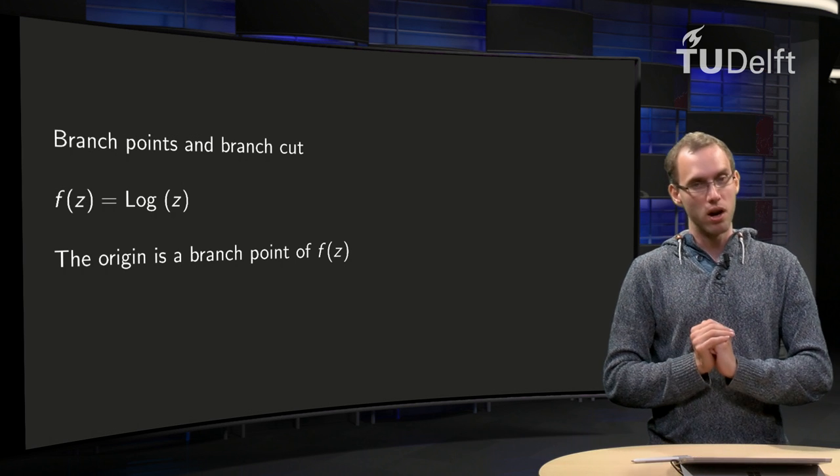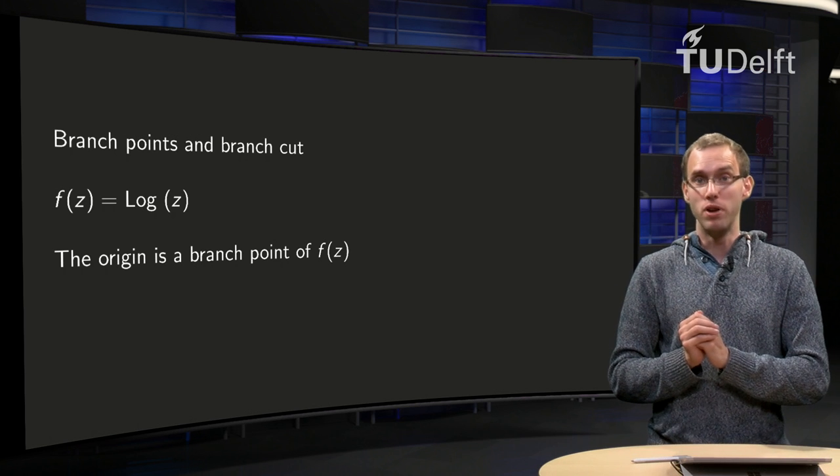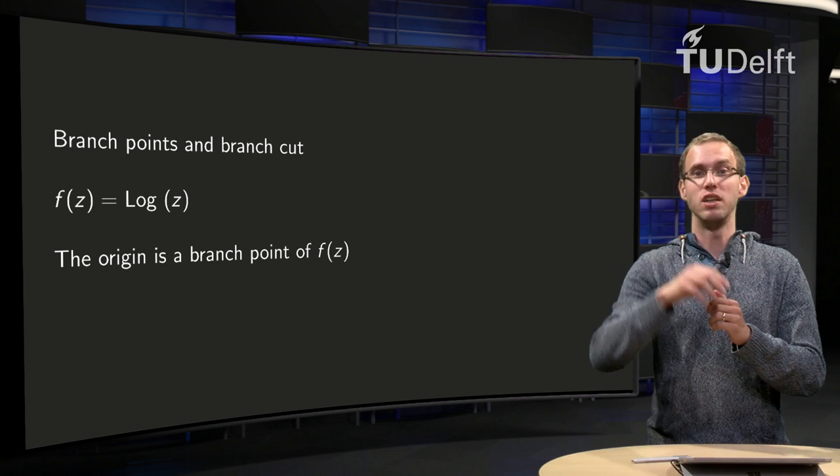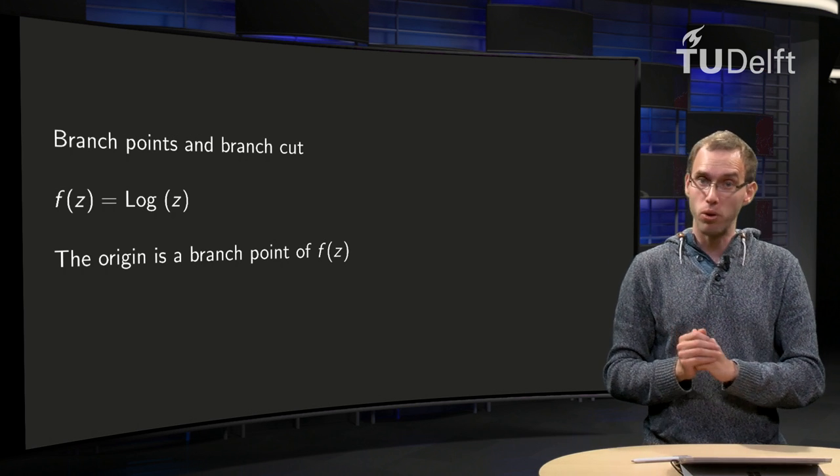So we had our f equals log, we saw that the origin is a branch point of the log. If we go around the origin in the domain, we end up at another point in the codomain.